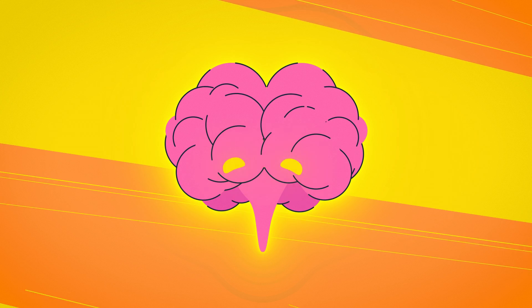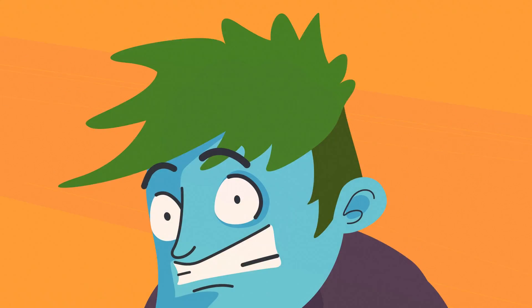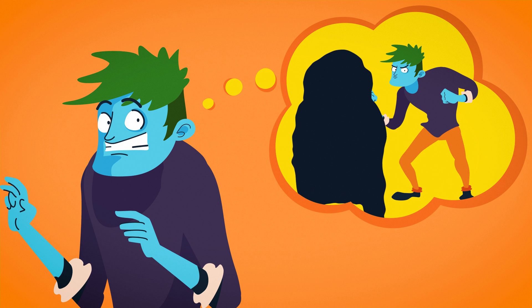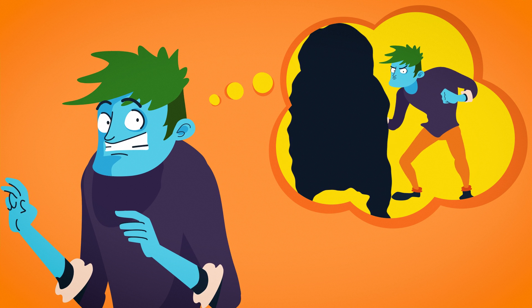The amygdala and other pathways in your brain help form a memory based on this experience, potentially affecting how you react to a similar threat in the future.